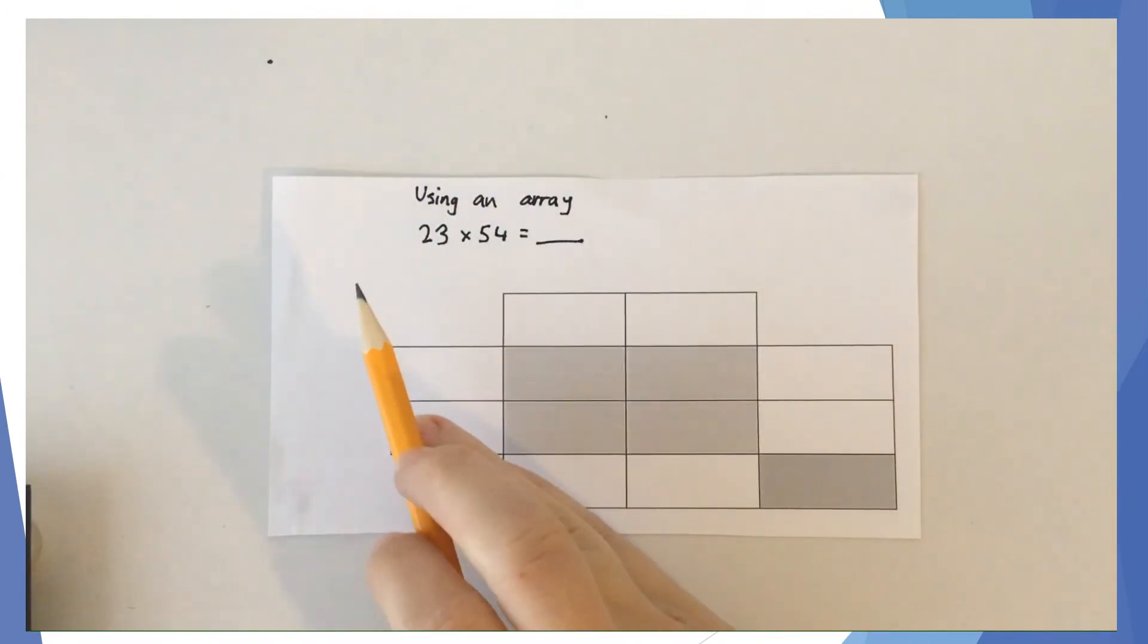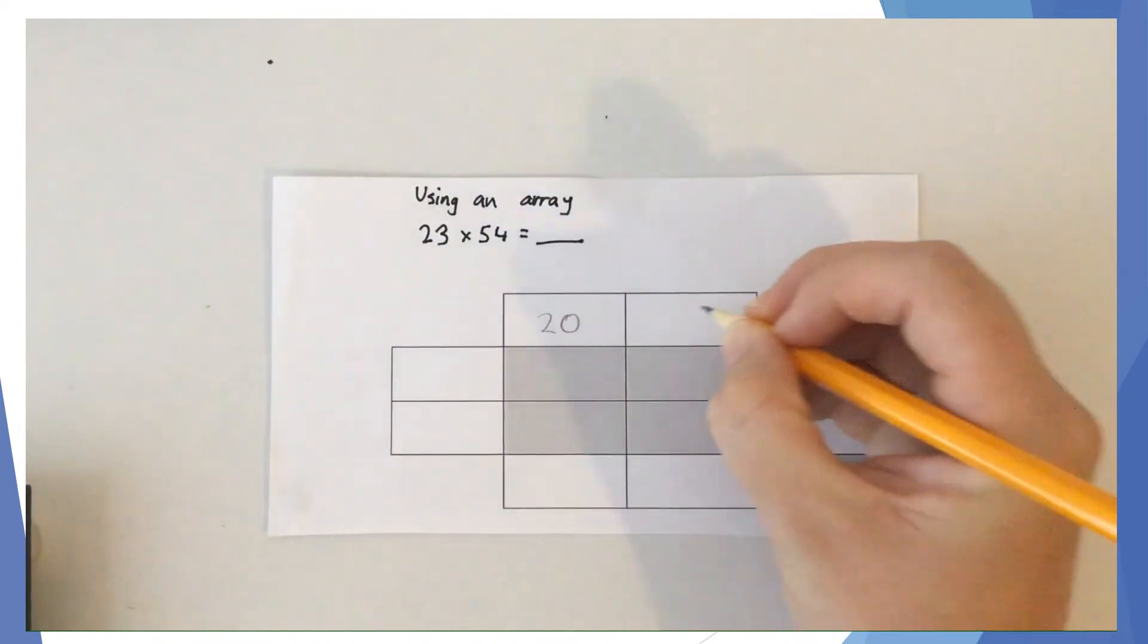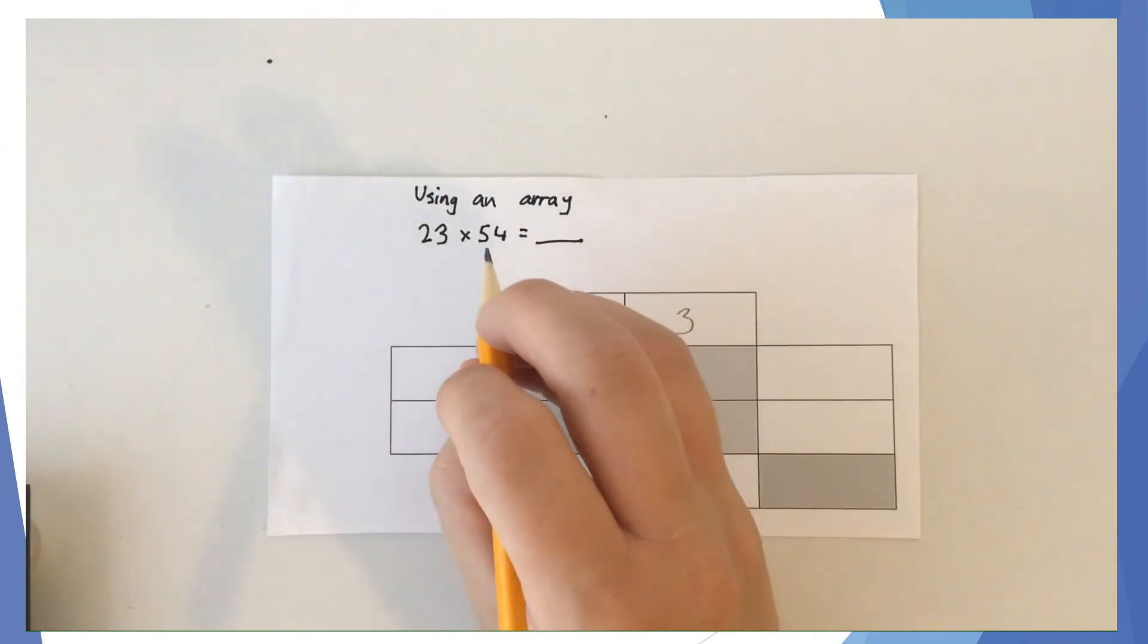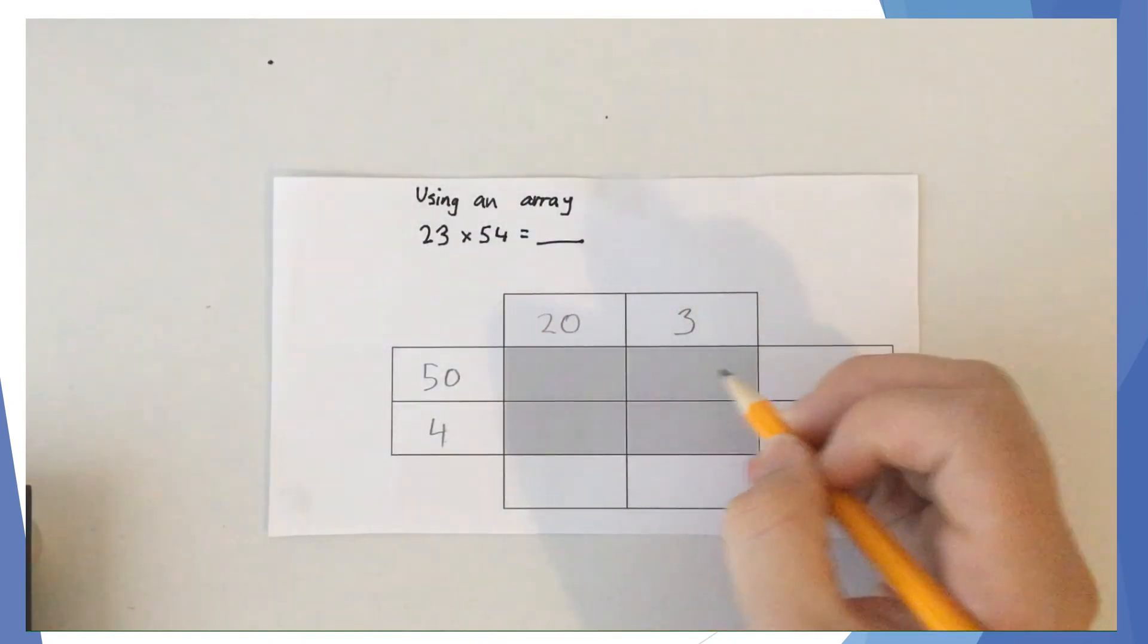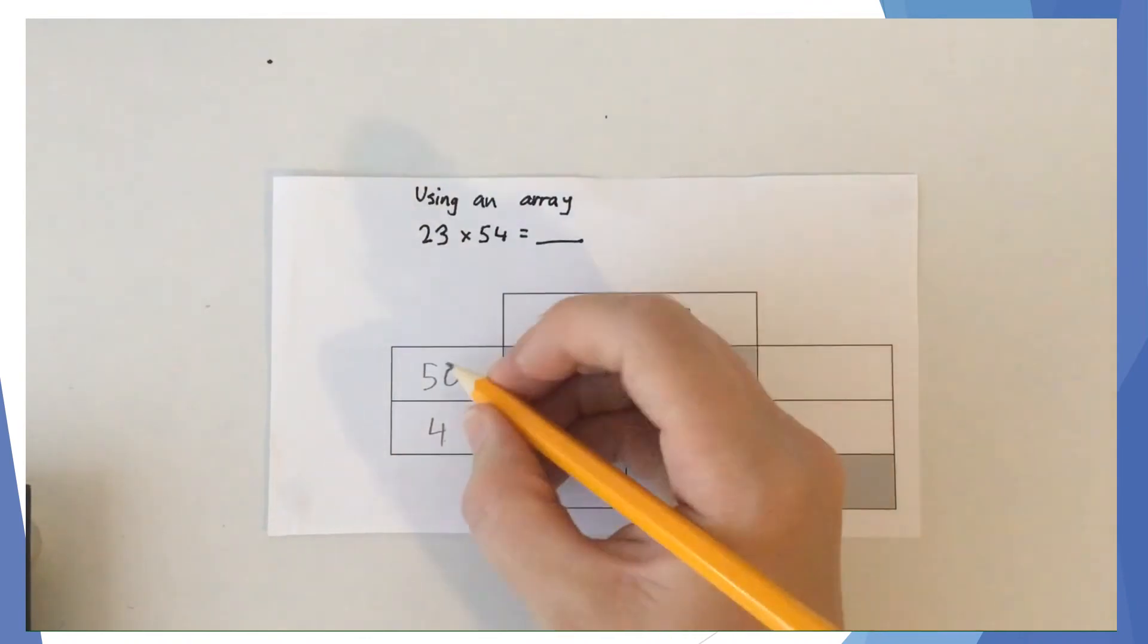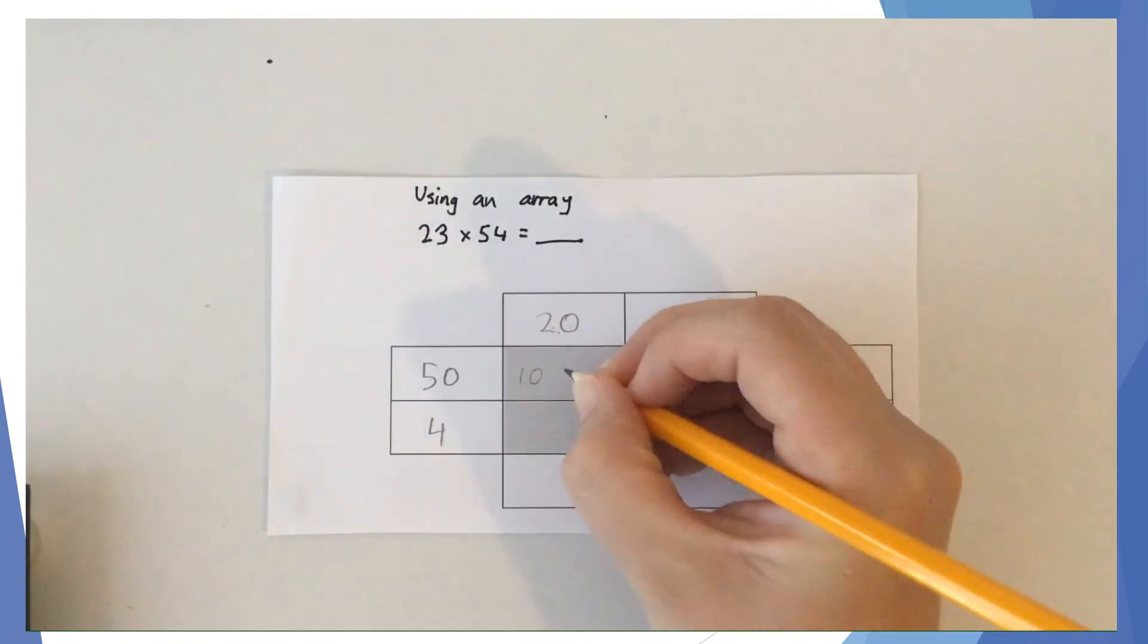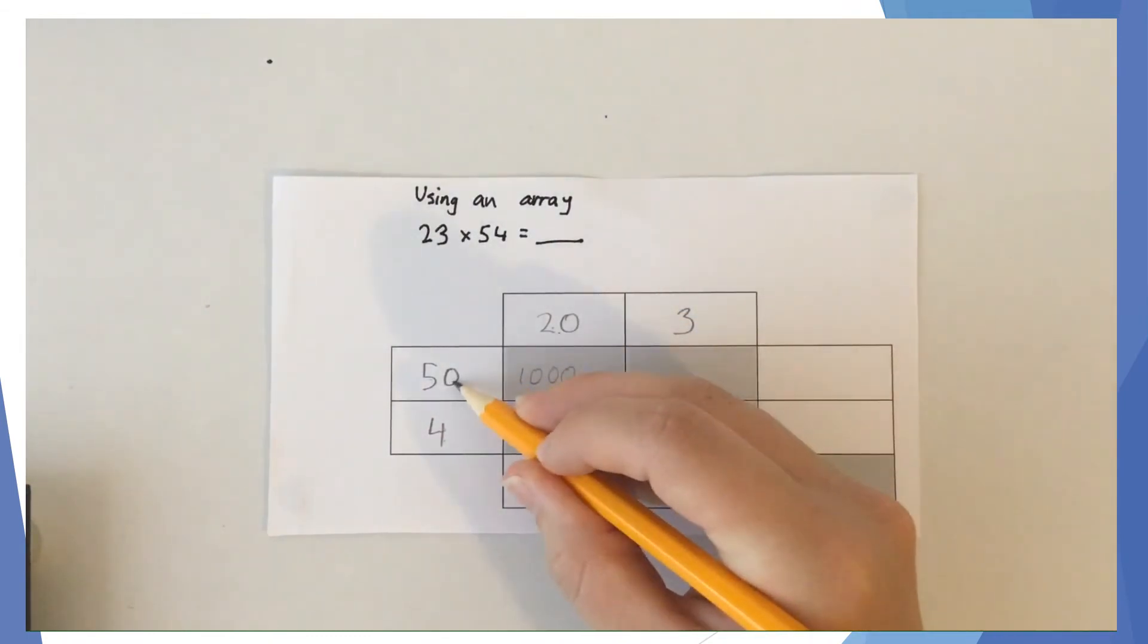Now we're going to use an array to calculate what 23 times 54 is. We need to split 23 and 54 up into their component parts. In the case of 23, it's 20 and 3. In the case of 54, it's 50 and 4. What we then need to do is multiply these in sections and then add them all together at the end. 50 times 20 - 5 times 2 is 10, and I have two other zeros to add, so 1,000.